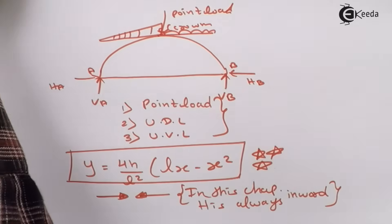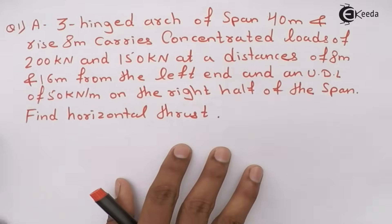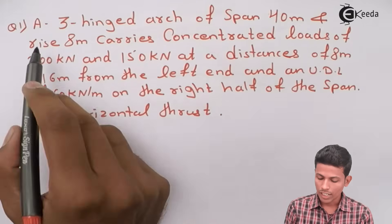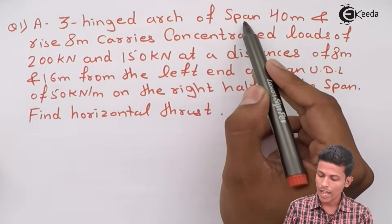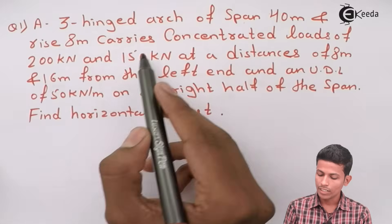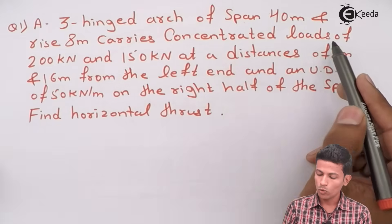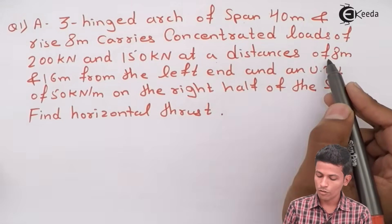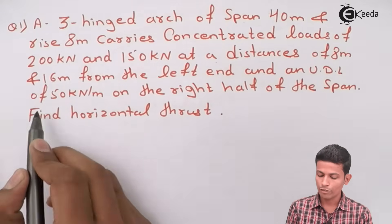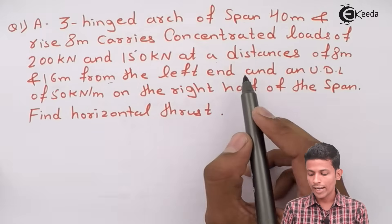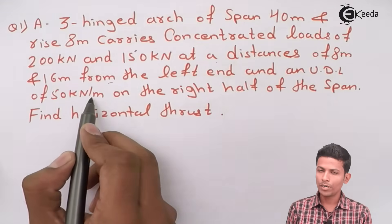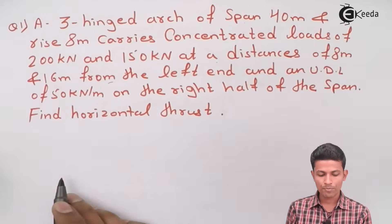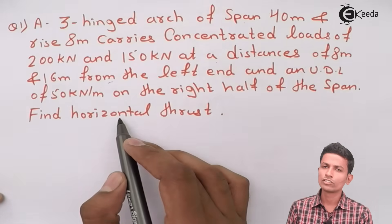Now we are starting Problem Type 1. Question: A 3-Hinged Arch of span 40 meters and rise 8 meters carries concentrated loads of 200 kN and 150 kN at distances of 8 meters and 16 meters from the left end, and a UDL of 50 kN/m on the right half of the span. Find the horizontal thrust.